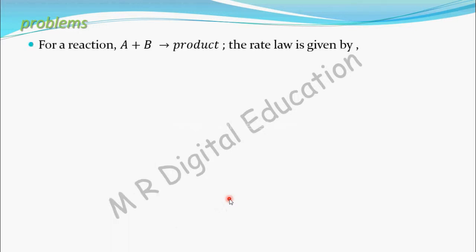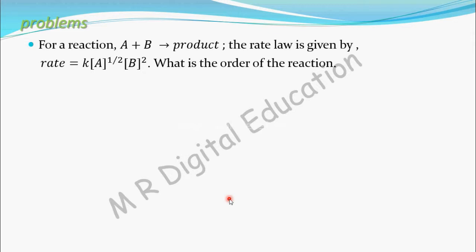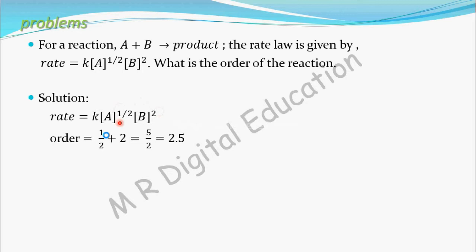Take one more problem. For a reaction A plus B gives product, the rate law is given by rate equal to K into concentration of A to the power 1 by 2 into concentration of B to the power 2. So what is the order of reaction? Order is nothing but sum of powers of the concentration terms: 1 by 2 plus 2 equals 5 by 2, that is 2.5. So it is an example of a fractional order reaction.